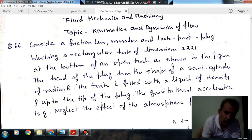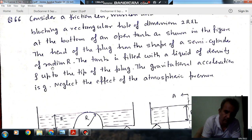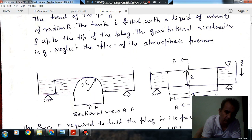At the bottom of an open tank as shown in the figure, the head of the plug has a shape of a semi-cylinder of radius R. The tank is filled with a liquid of density ρ up to the tip of the plug. The gravitational acceleration is G. Neglect the effect of atmospheric pressure.